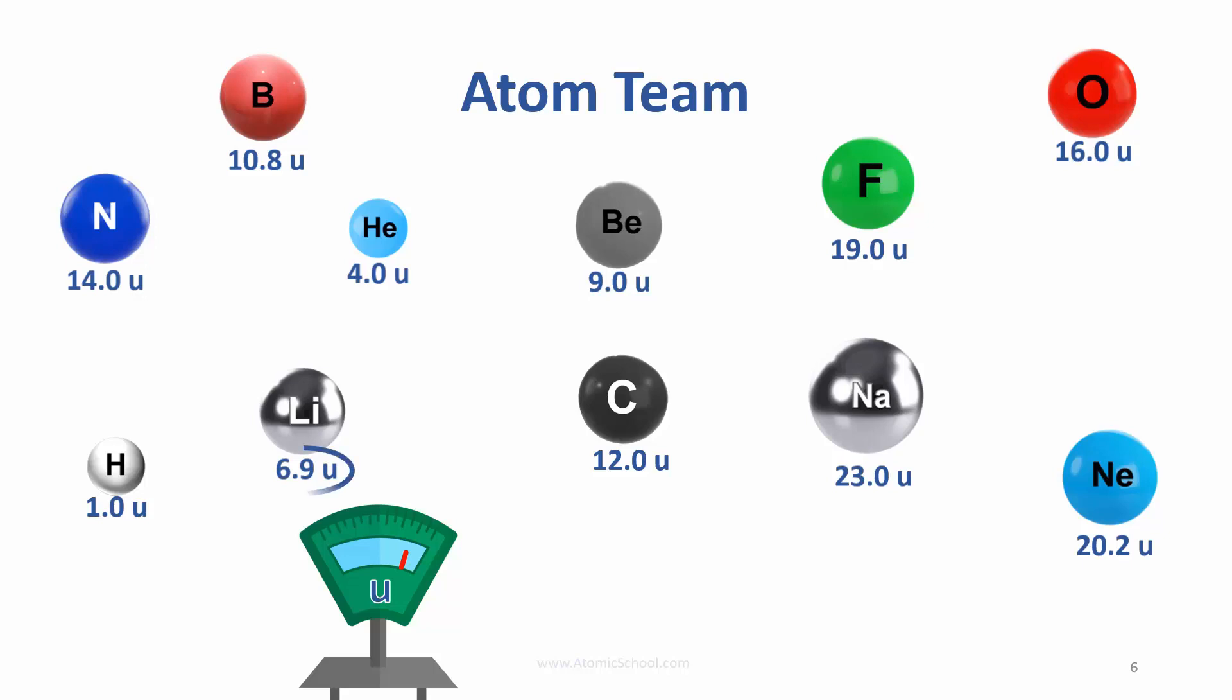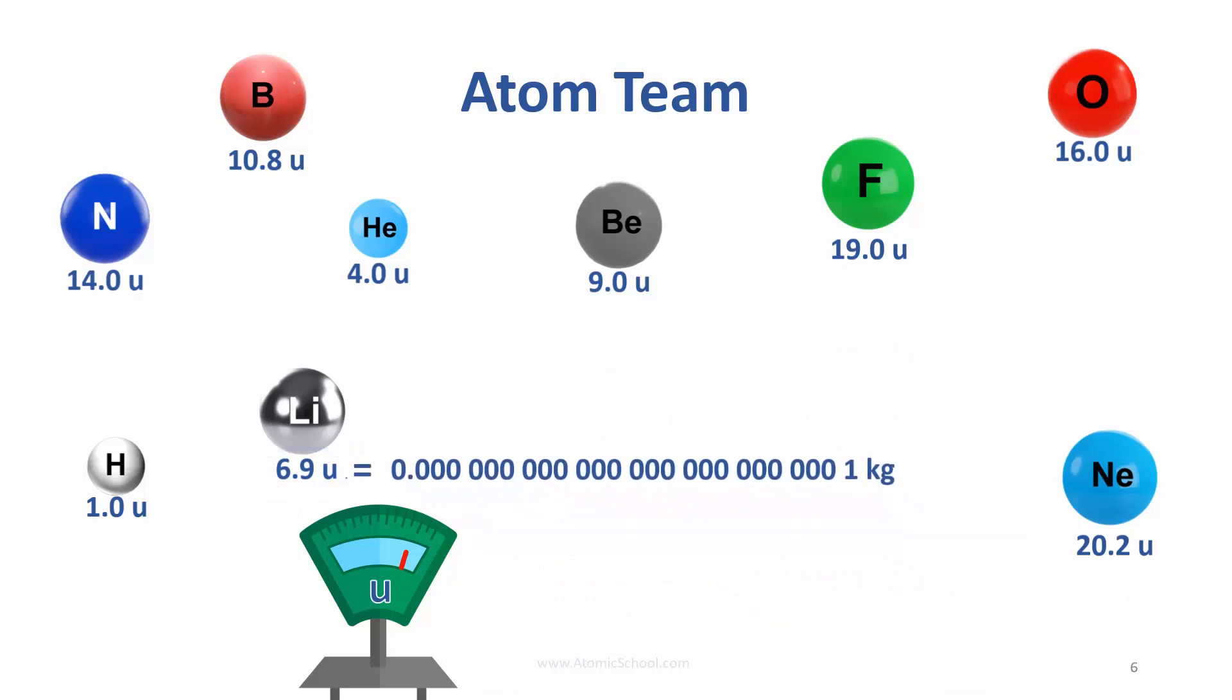You can see that lithium is now 6.9U. Before we said it was a 10 trillion trillionth of a kilogram. Does that mean its mass has changed with this new scale? No. 6.9U is the same as a 10 trillion trillionth of a kilogram. The same mass is just being measured in different units, just like you get different numbers if you weigh yourself in kilograms or pounds.